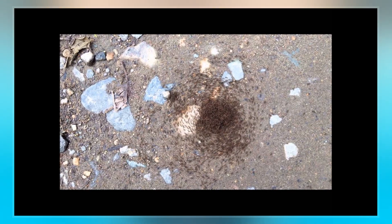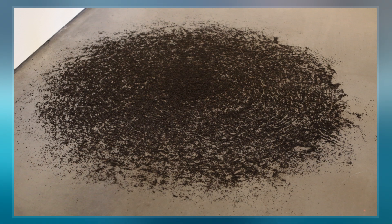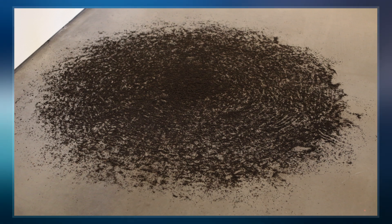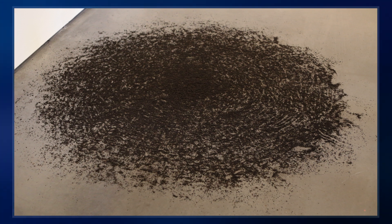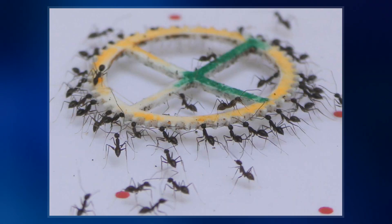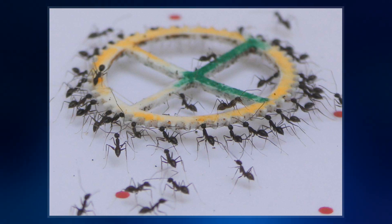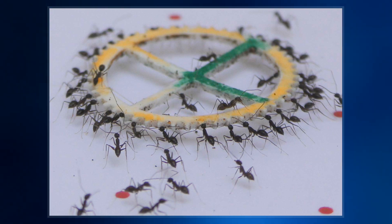An ant mill was first described in 1921 by William Beebe, who observed a mill 1,200 feet in circumference. It took each ant 2.5 hours to make one revolution. Similar phenomena have been noted in processionary caterpillars and fish.